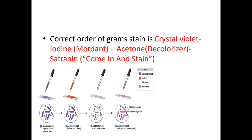The correct order of gram staining: first, application of crystal violet; second, application of iodine, which is a mordant; third, we wash with alcohol — that is decolorization; and then we apply safranin, which is the counter stain.